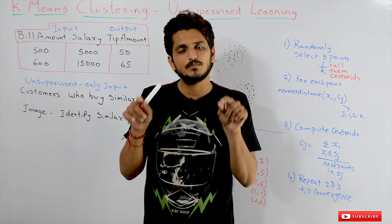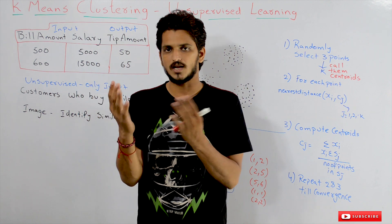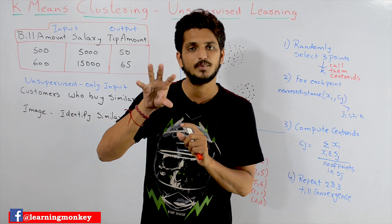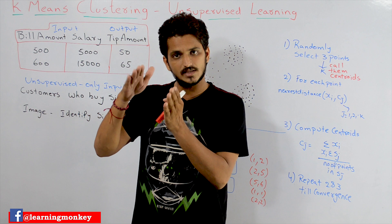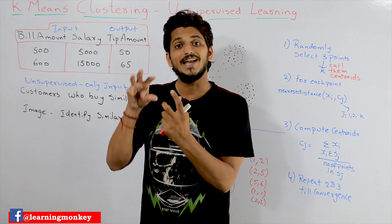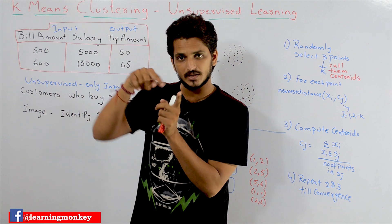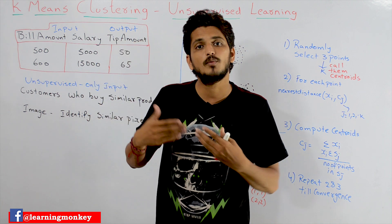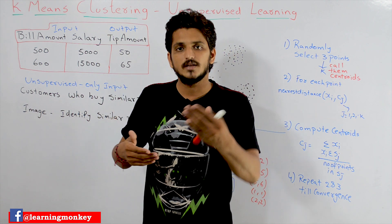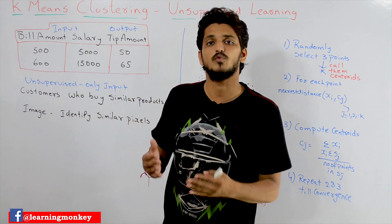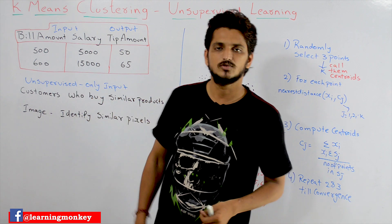If you identify the similar pixels, the background will have one set of pixels and the elephant will have a similar kind of pixels. By grouping similar pixels together, we can identify the object in the image, such as where the elephant is. That is one use of unsupervised learning in images. These are examples of unsupervised learning models.